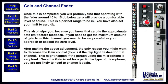Once this is completed, you will probably find that operating with the fader around 10 to 15 decibels below zero will provide a comfortable level of sound. This is a perfect range to be in. You have also set your limit to zero decibels. This helps you because you know that zero is the approximate safe limit before feedback. If you need to get the maximum amount of gain from this channel, you need to be very careful as you approach or exceed the zero level.